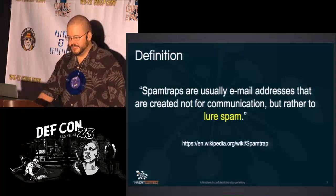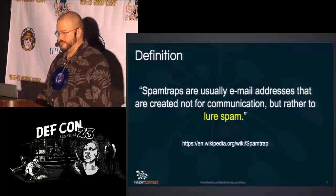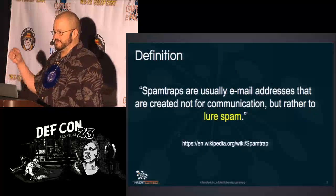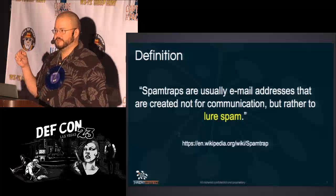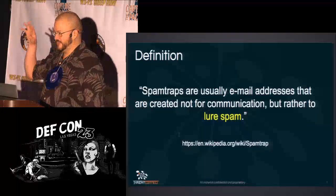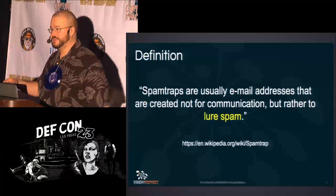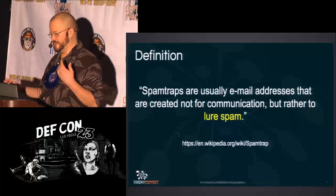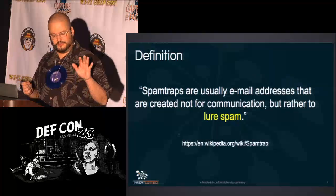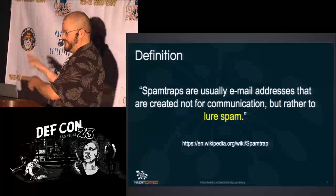According to Wikipedia, spam traps are email addresses created not for communication but to lure spam. The point is to get more spam from as many different sources as possible, and to track which address you put on which website. That gives you metrics on which location for an email address is better at generating certain types of spam, and therefore gathering certain types of botnets and binaries — so you can focus seeding in the right areas.